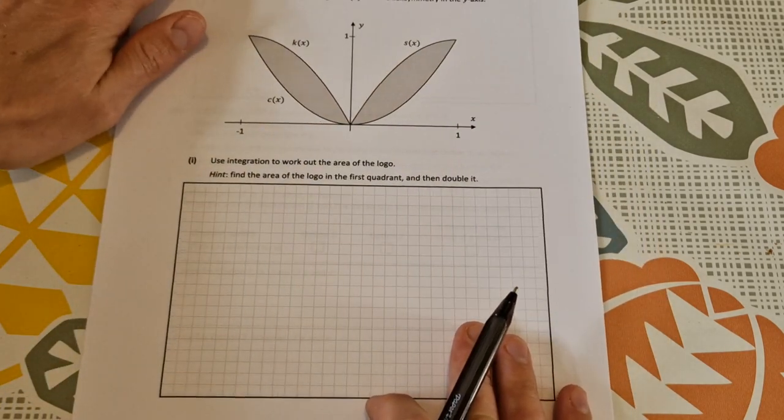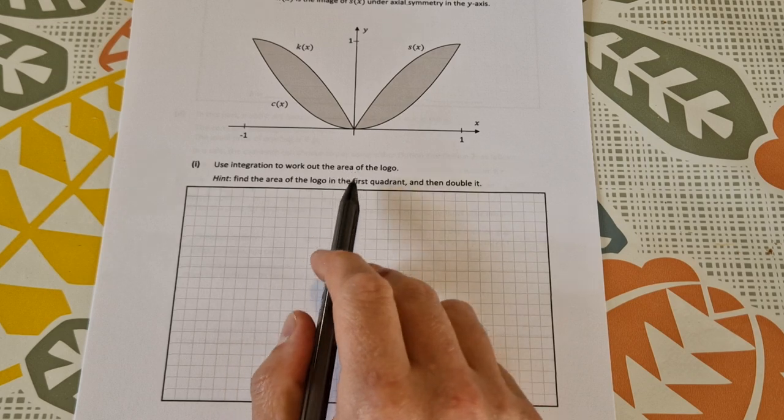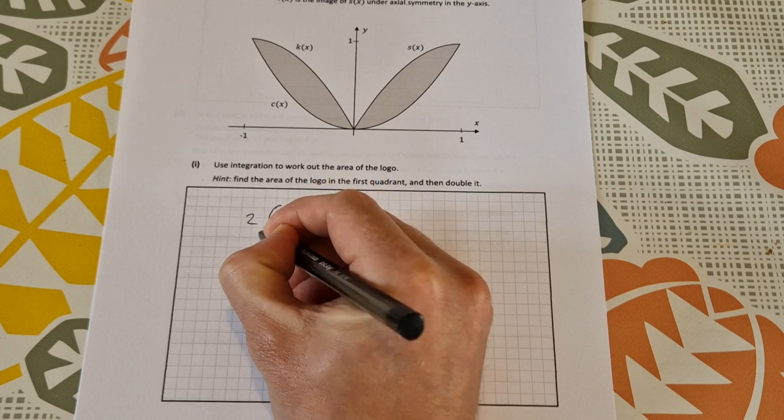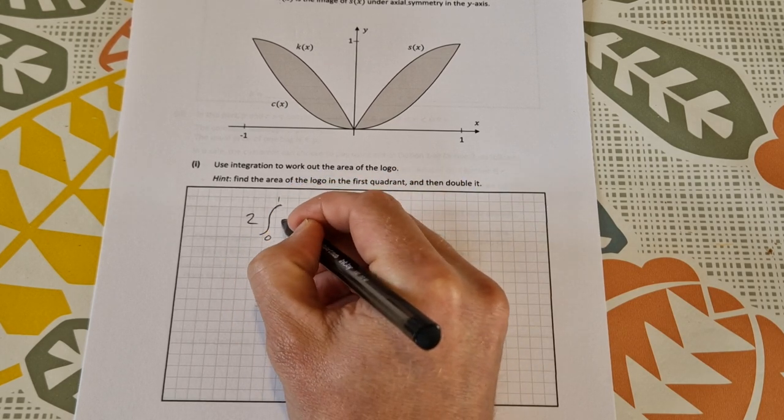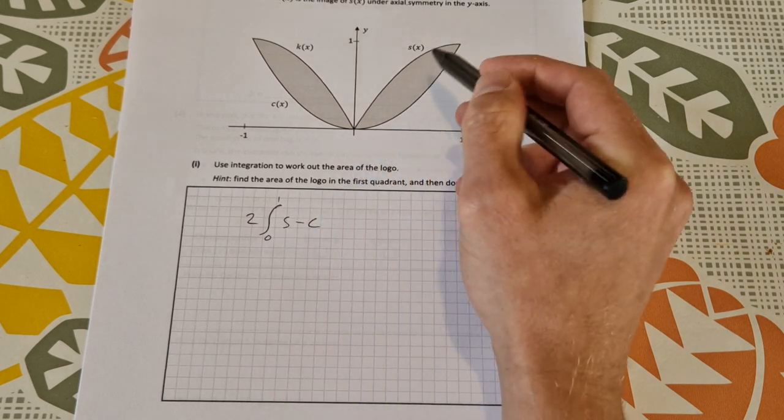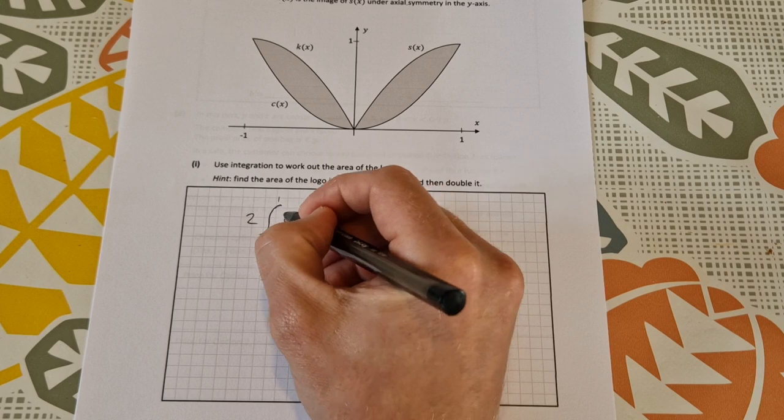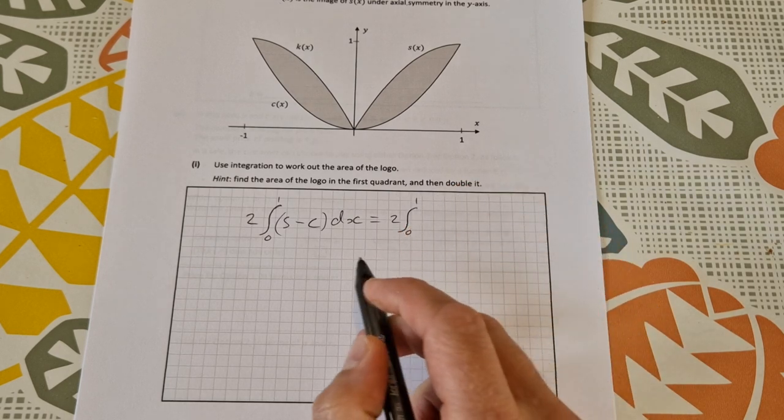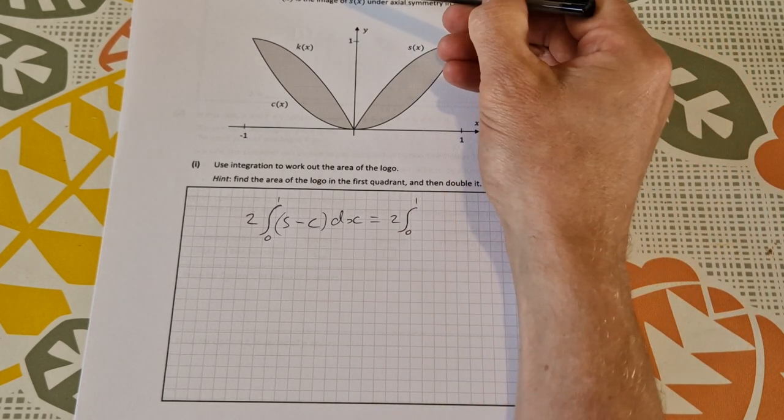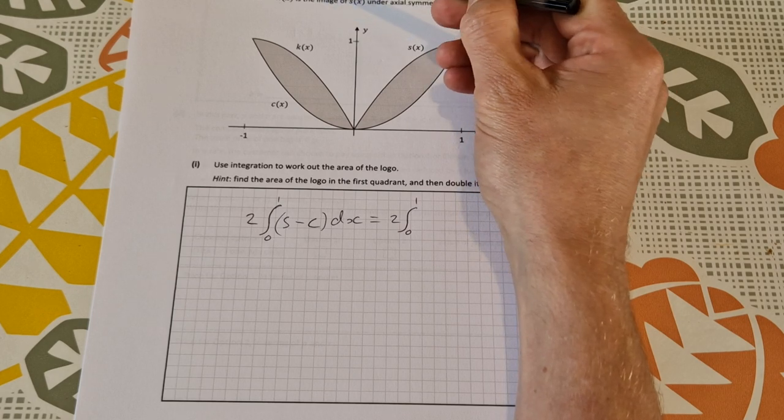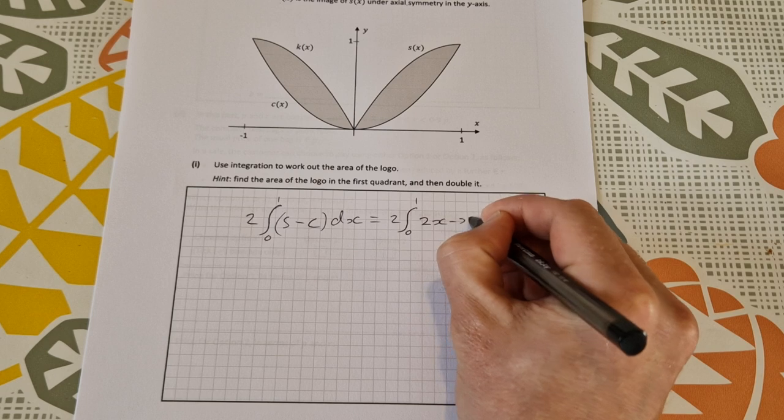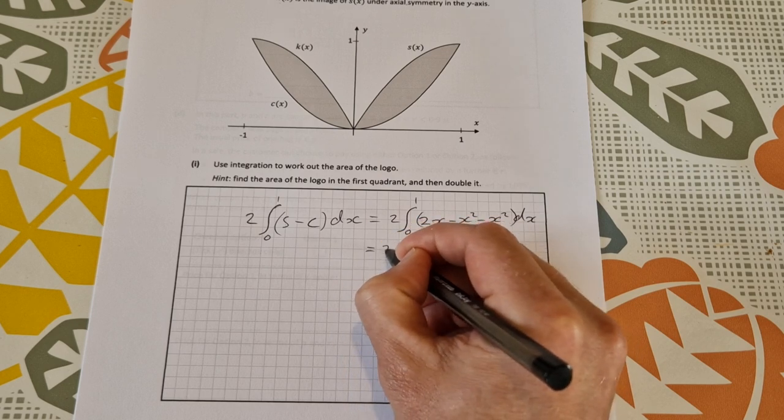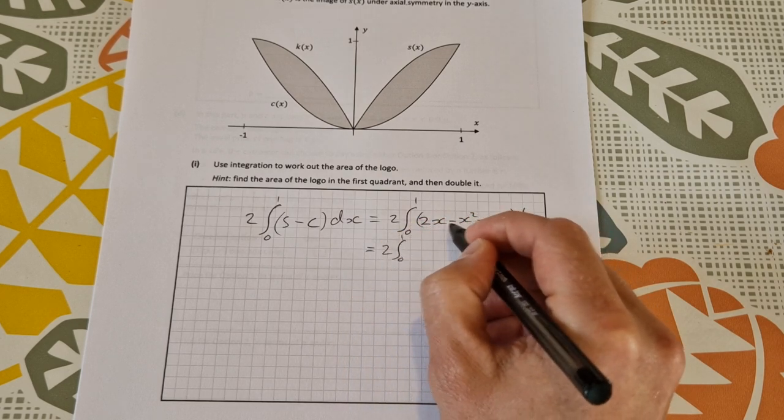So you just have to do your work once and then multiply by two. To find the area under the curve, it's going to be twice the area, so I'm going to write twice the integral to get the area under the curve between zero and one of s minus c. So that's equal to twice the integral from zero to one, s minus c, so that is 2x minus x squared minus x squared, which simplifies to 2x minus 2x squared dx.